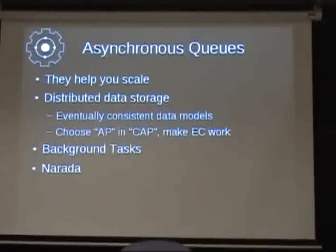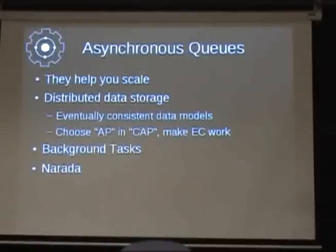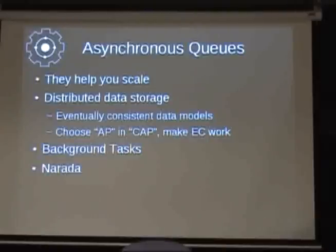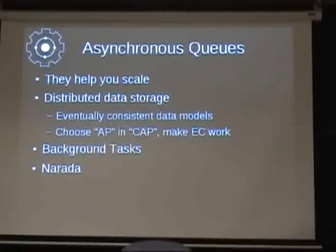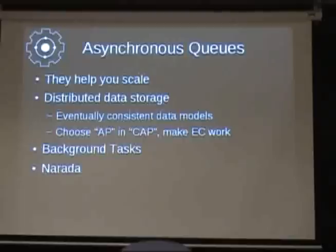One thing I was originally doing with Gearman was distributed data storage for email. I developed an entire database schema backed by MySQL or Drizzle, where when you send an email it would be replicated three times. If you then renamed the folder the email went into, the order of those events didn't matter — at the end of the day, once all events were processed, you had the same consistent view for all users regardless of which replication server you had. Those data models need to be what people have been calling 'eventually consistent,' and there's a whole paper on eventually consistent data models by the Amazon Dynamo team.